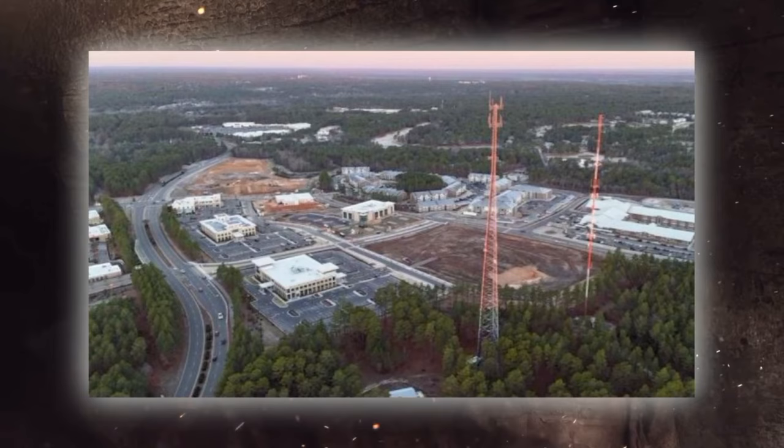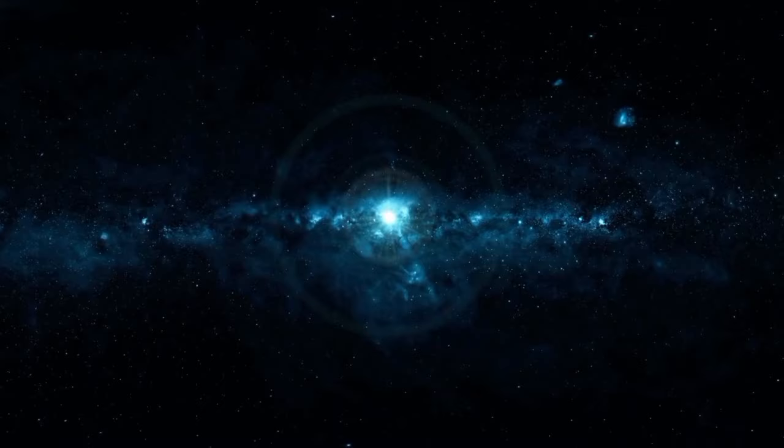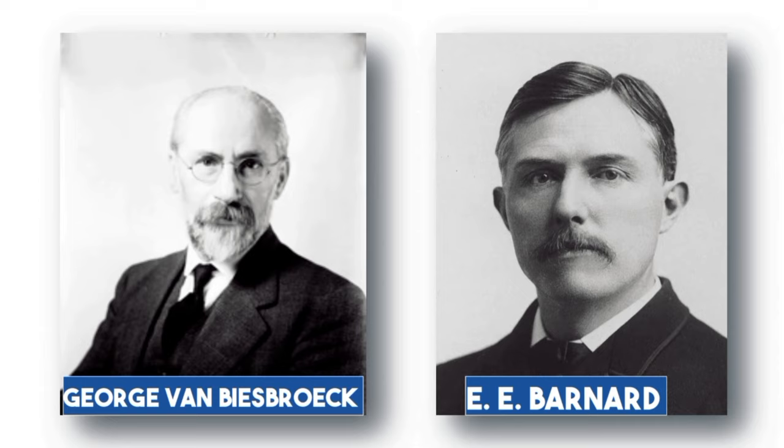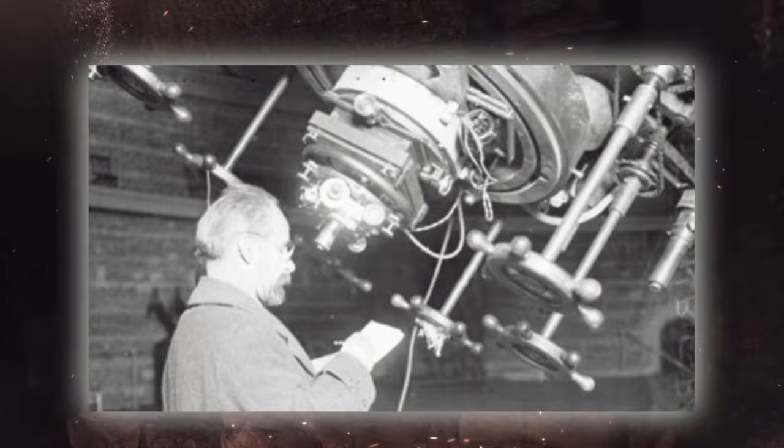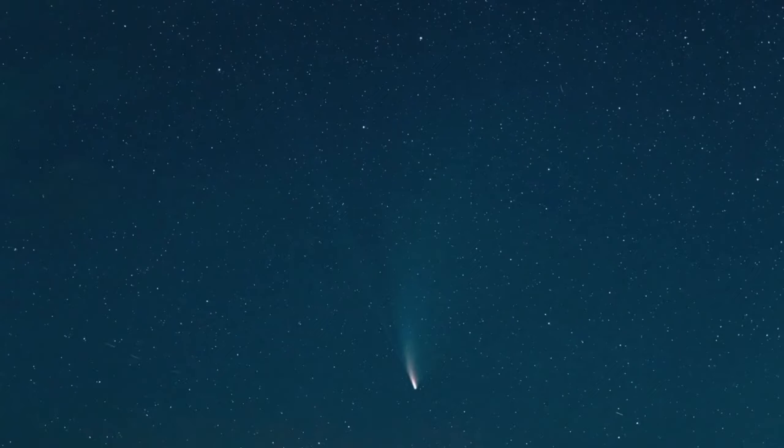Comet Taylor is a periodic comet within our solar system, first spotted by Clement J. Taylor in Cape Town, South Africa, on November 24, 1915. Let's explore Clement J. Taylor's shocking revelation. Later observations by George Van Biesbroeck and E.E. Barnard at the Yerkes Observatory in Wisconsin, United States, revealed that the comet had split into two distinct nuclei, although this phenomenon was not observed after March 16.